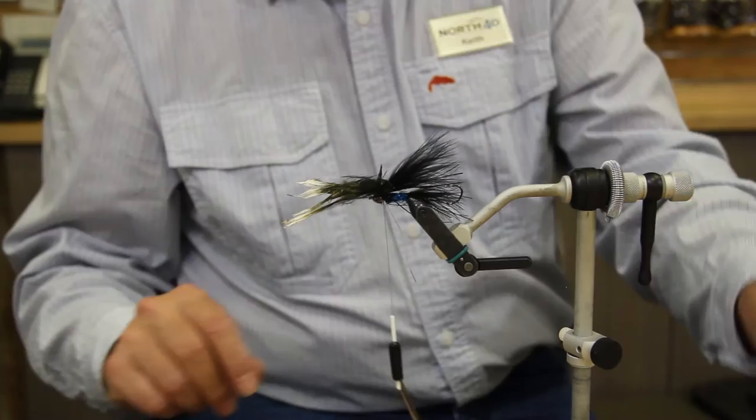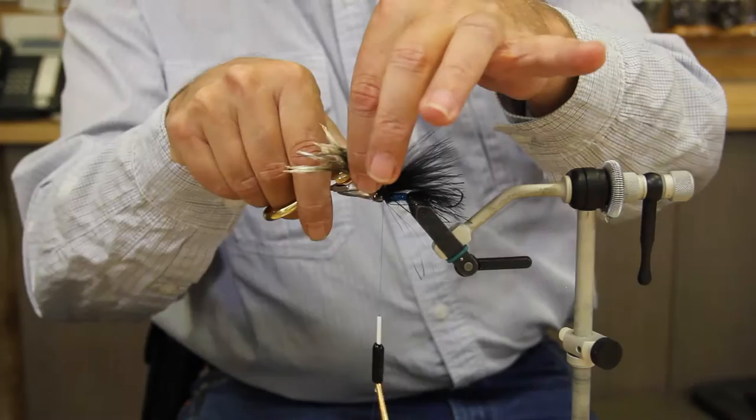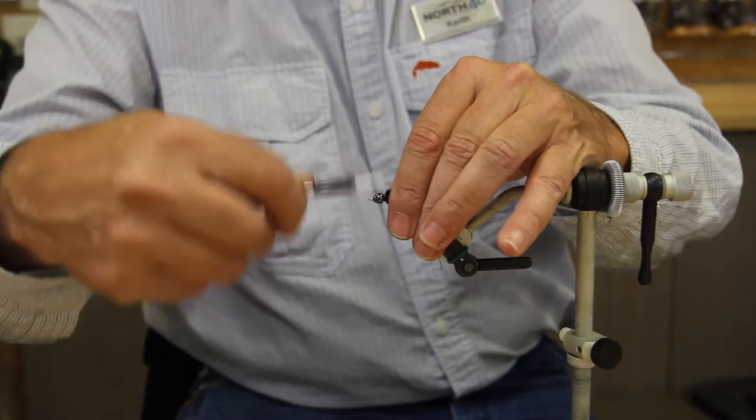Again, you're going to lay that right back to the edge of your flash-a-boo. A couple of turns to secure it. You don't need a lot. Trim off your excess. Okay.